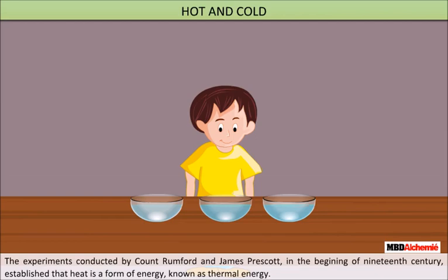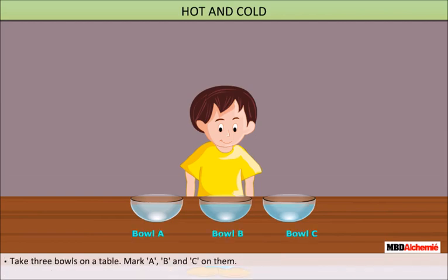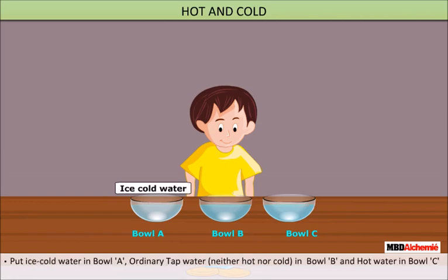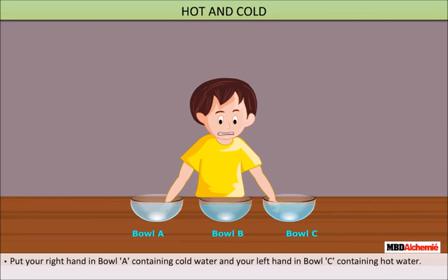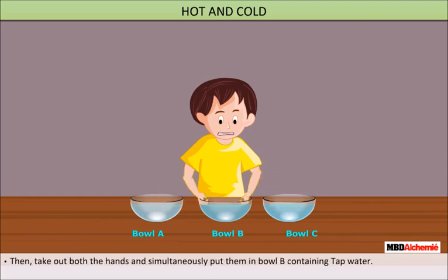Known as thermal energy. Take three bowls on the table, mark A, B, and C on them. Put ice cold water in bowl A, ordinary tap water (neither hot nor cold) in bowl B, and hot water in bowl C. Put your right hand in bowl A containing cold water and left hand in bowl C containing hot water.